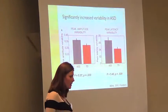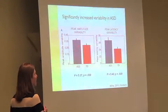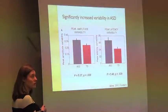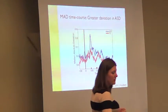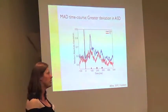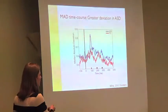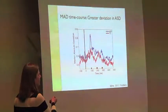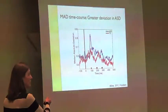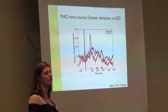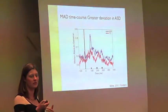Here are the results. Amplitude variability was significantly greater in the participants with autism. Latency variability was also significantly greater in the participants with autism. This shows amplitude variability across the time course — you can calculate median absolute deviation across all time points. You can see at zero, where the target appears, there's a real increase in variability for the autistic participants. It seems specifically as though the variability is associated with evoked activity — the recruitment of neural networks that underpin visual perception.